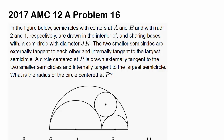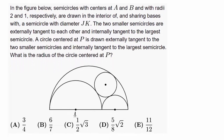This question is 2017 AMC 12A Problem 16. In the figure, semicircles with centers at A and B have radii 2 and 1 respectively. They are drawn in the interior of and sharing bases with a semicircle with diameter JK. The two smallest semicircles are externally tangent to each other and internally tangent to the largest semicircle. A circle centered at P is drawn externally tangent to the two smaller semicircles and internally tangent to the largest semicircle.